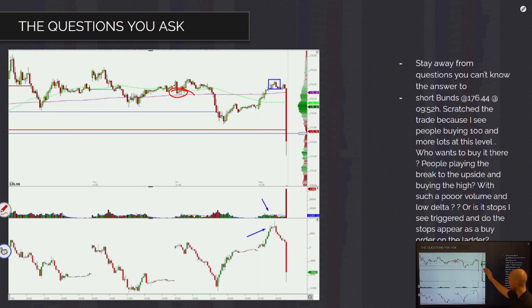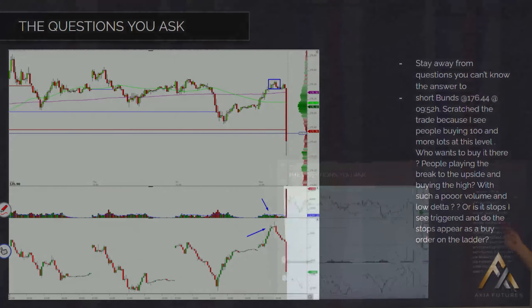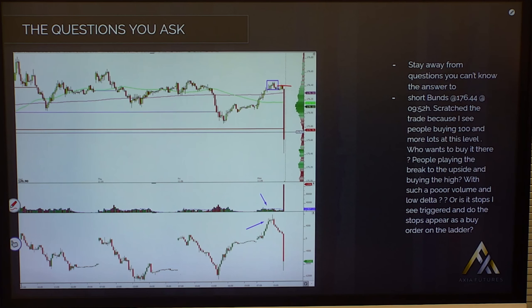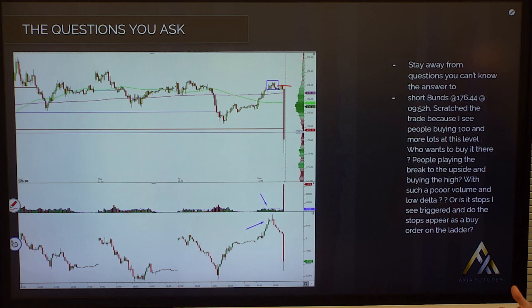And this was the example of being asked, well, and this is the quote, I want to be short bunds, scratch the trade because people were buying 100 lots up here. So people buying 100 lots up around here, didn't like the trade, so scratched it. Who wants to buy it up there? And then people playing breaks the upside? Why would they be doing it with such poor volume and no delta? Is it stops I see triggered and do the stops appear as a buy order on the ladder? You're asking a lot of questions here about why someone would do something, what their motivation is.